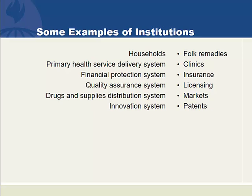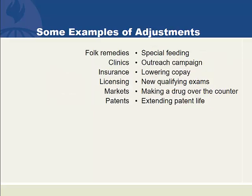Inside those institutions, there are adjustments — ways to play differently under the rules and norms. For instance, if one has an institution of folk remedies, there can be special feedings, foods that you eat when you're feeling sick. In many places, when your tummy hurts, they will give you chamomile tea as an example of a folk remedy. That is an adjustment — how you play the game under the rules of folk remedies.